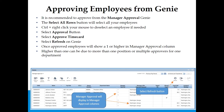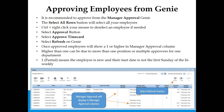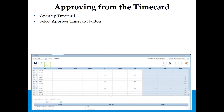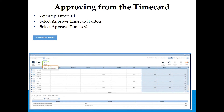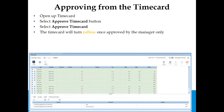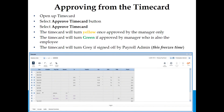Select Approved Time Card, then select the Refresh button. You should see one or higher in the Manager Approval column. Higher than one can be due to more than one supervisor or multiple approvers for one department. One Partial means the employee is new and their start date is not the first Sunday of the bi-weekly period. Approving from the Time Card: Open up the time card, select the Approved Time Card button, and select Approved Time Card. The time card will turn yellow once approved by the manager only. Kronos will display an info message that time has been approved. The time card will turn green if approved by a manager who is also the employee, and gray if signed off by Payroll Admin, which freezes the time.